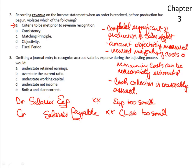So the answer to Question 2 is A. Question 3: omitting a journal entry to recognize accrued salaries expense during the adjusting process would — now, that entry would be where we're expensing the salaries now but will pay for the salaries in a subsequent period.